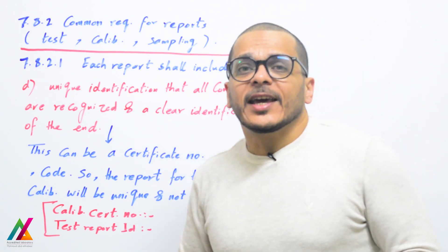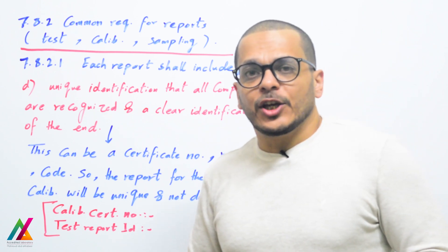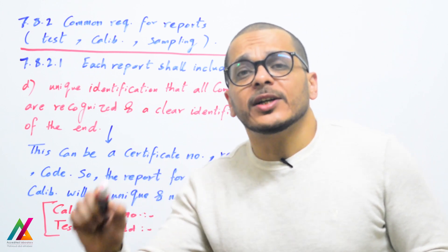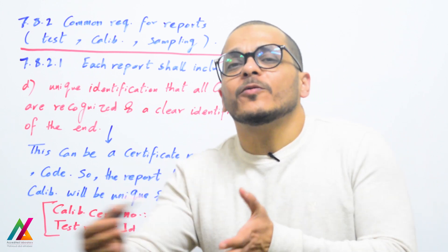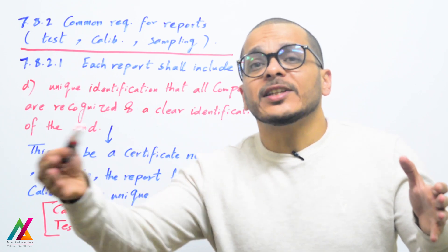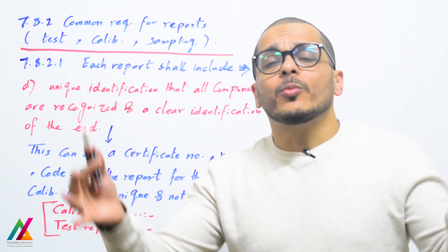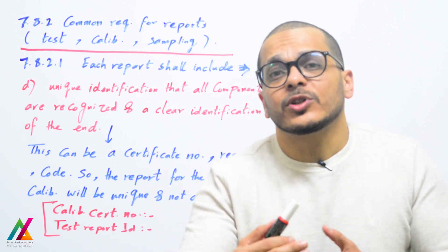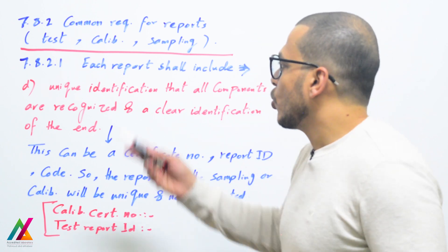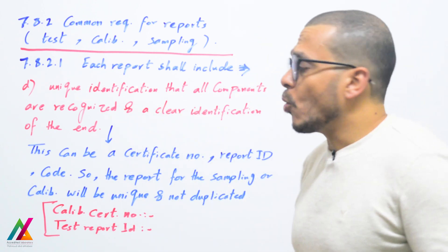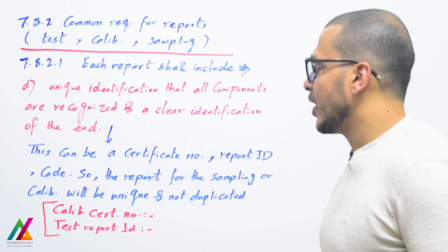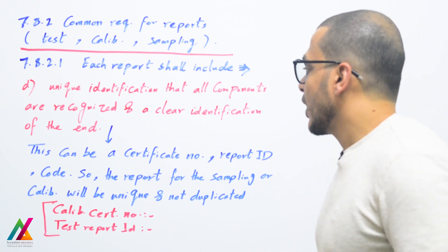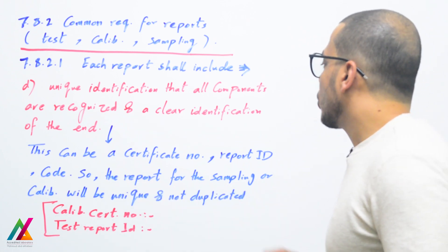The report shall have a unique identification so that all contents are recognized, with a clear identification of the end of the report. You need to identify the report by a specific number or ID so it can be tracked from the beginning through to the final report. All contents and tests required for the sample will be easily identified. This unique identification can be a certificate number, report ID, or code.